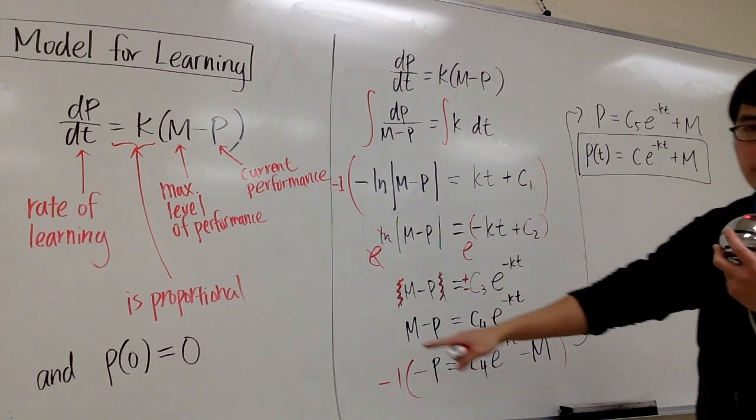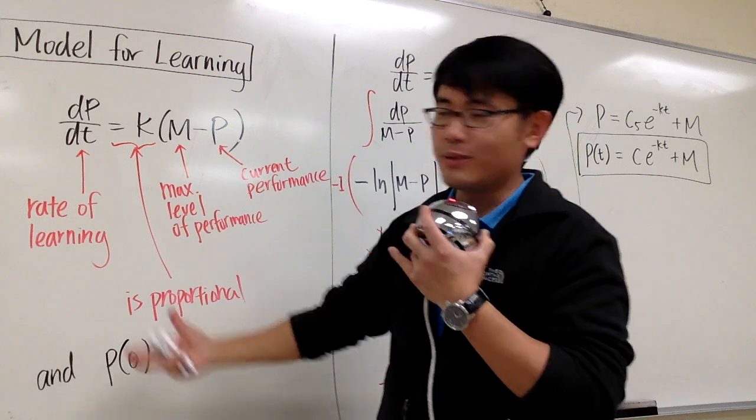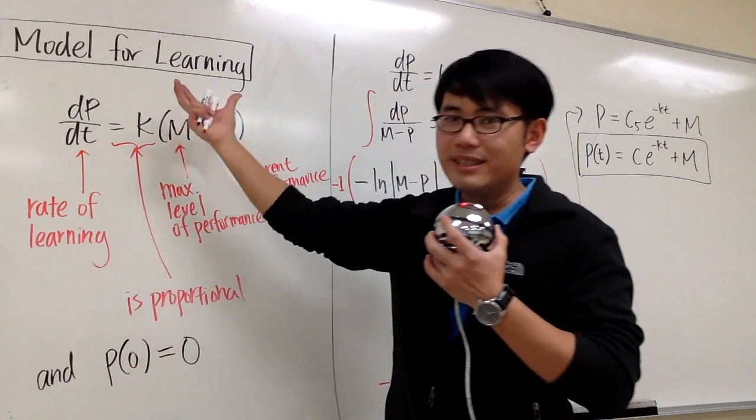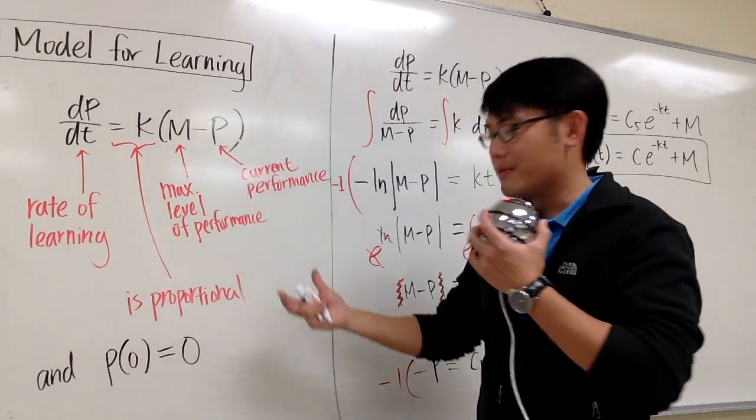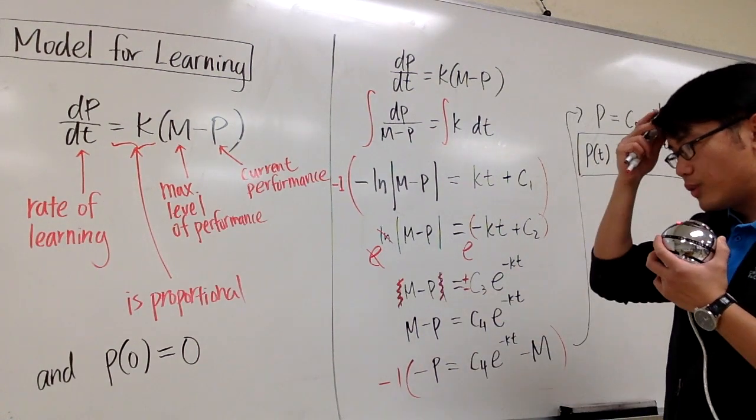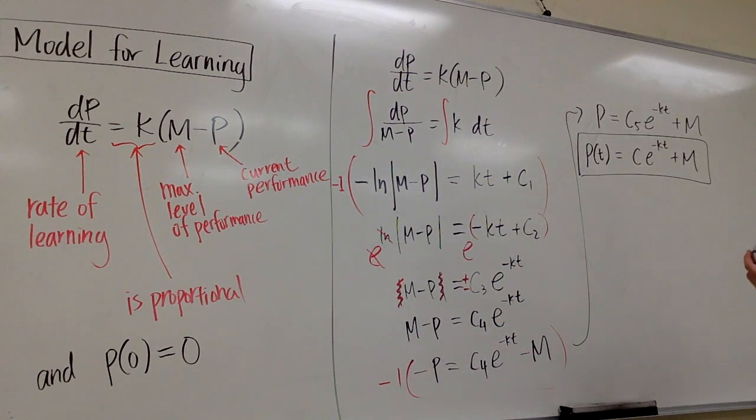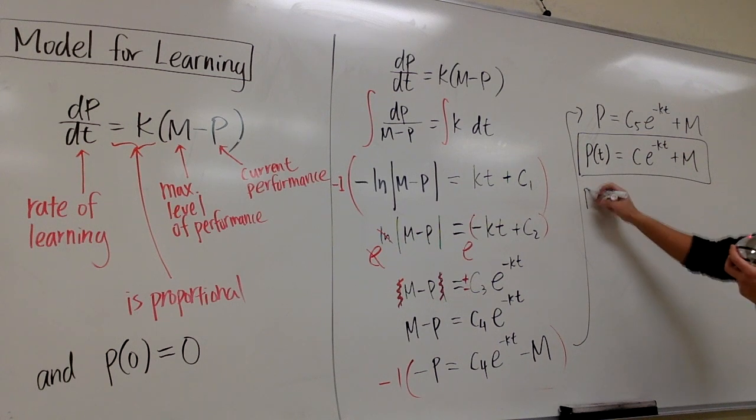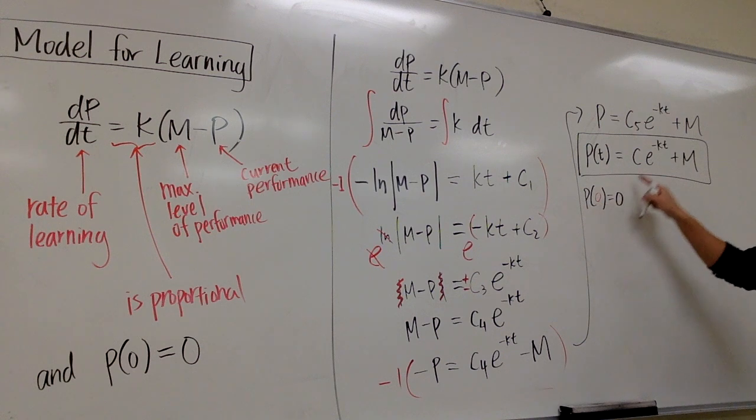But then, I do have an initial condition. At first, I don't know anything, right, if I use this to model how a person learns. Before we learn that skill, we don't know about anything. So, I will just plug in, p of 0, this will be 0, I will plug in 0 into this t,